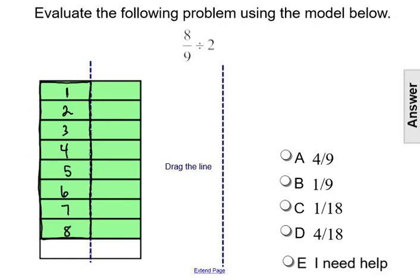8 shaded pieces. But it's no longer out of 9. When we split the 8/9 into 2 groups, we no longer have 9 pieces. We've actually doubled that. We have 18 pieces. So our quotient would be the 8 shaded pieces out of the 18 total pieces, which reduces to 4/9.